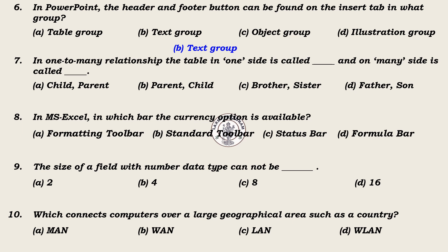7. In a one-to-many relationship, the table on the one side is called Parent and on the many side is called Child. Options: Child/Parent, Parent/Child, Brother/Sister, Father/Son. Answer: Parent, Child.